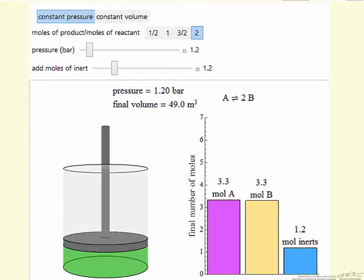The other is to look at equilibrium in a constant volume system. Again, we start with 5 moles and select the pressure to start with, but the pressure will change as we go to equilibrium, and we can add inert to that system.